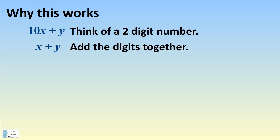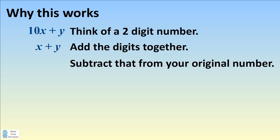If you subtract the sum of the digits from the original number, the y's will cancel out, so you have 10x minus x which is equal to 9x. I don't know what your original number is. I don't know what the sum of your digits are, but I know your magic number will be a multiple of nine.